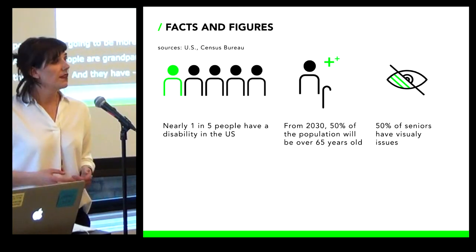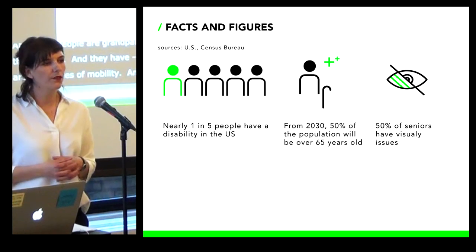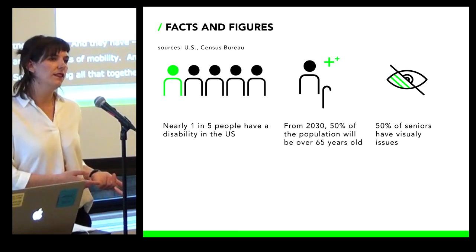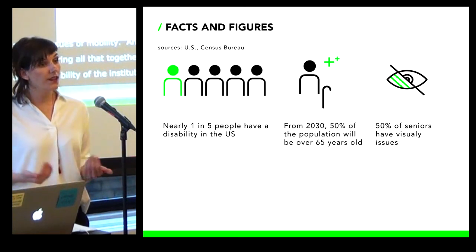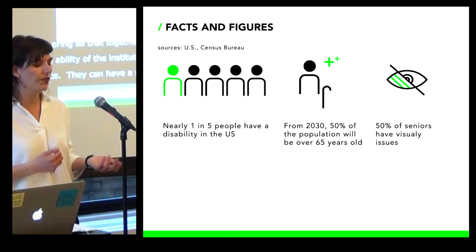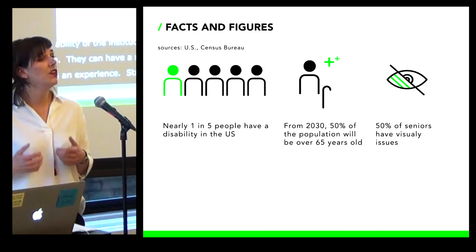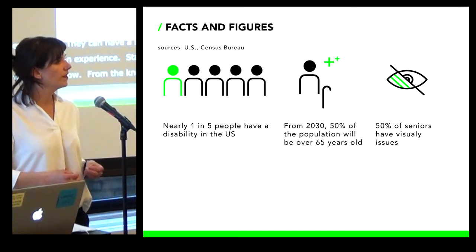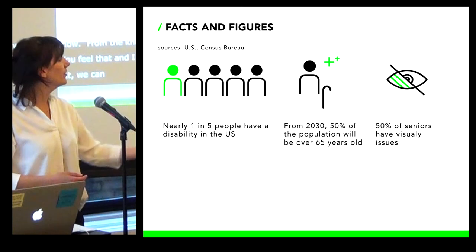Many seniors have visual impairment and mobility issues, and there is also museum fatigue. If we stop thinking about the disability of the person and instead think about the ability of the institution to change how people experience it — give them a seat, let them smell something, let them start from their perception and what they feel rather than assumed prior knowledge — we can open a conversation. We are just here to open windows. When people visit a museum for one or two hours, we want to make the experience enjoyable so they want to come back and bring friends.